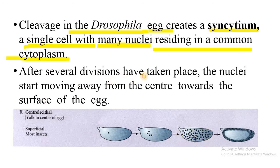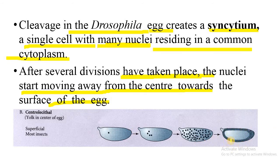After several divisions of the nuclei have taken place, the nuclei start to move from the center towards the surface of the egg. These nuclei move towards the periphery. Once the nuclei enter the periphery, the plasma membrane of the oocyte invaginates to surround each nucleus.